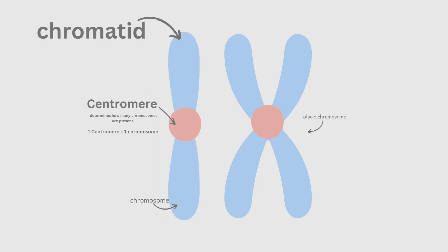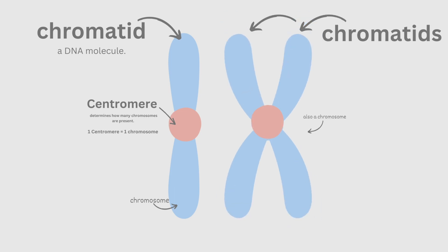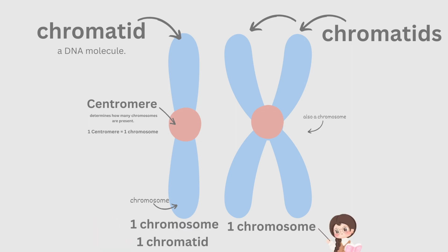This long shape here is called a chromatid. A chromatid is a piece of DNA — a DNA molecule. Technically it's made of DNA and histone proteins. Here we have two chromatids. So on the left we have one chromosome with one chromatid, and on the right we also have one chromosome with two chromatids.